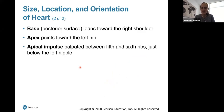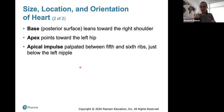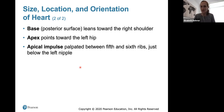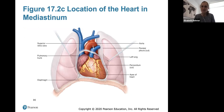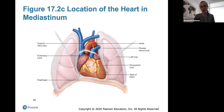The base of the heart leans toward the right shoulder, so the heart is tilted on itself — the base leans toward your right shoulder and the apex, the pointed part, points toward your left hip. The apical impulse can actually be palpated between your fifth and sixth ribs, just below your left nipple, and doctors will sometimes feel for that as well.